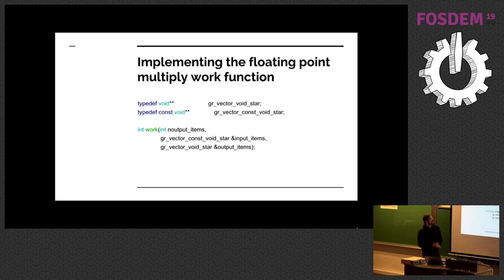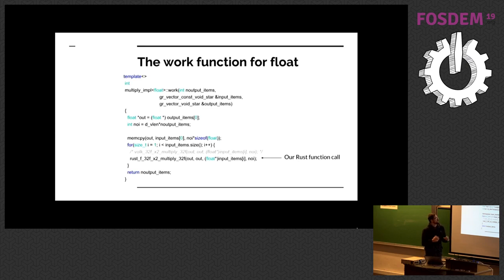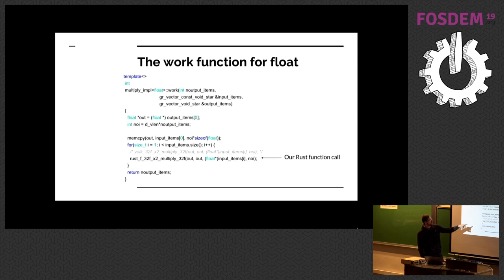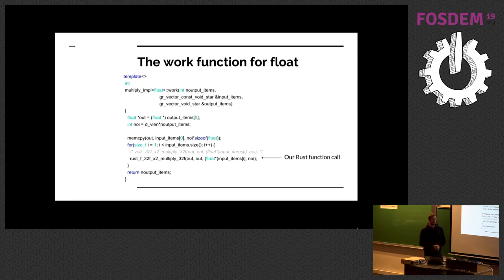Getting back to this function — we have some void pointers that we're playing with. We can just call into the Rust library. If we look more specifically at how we've implemented on the C++ side for the float type, it's not that weird — we're just saying that those void pointers, they were floats, it's fine. There happens to be a really nice place here where before we were calling into the Volk library, we can just now call into the Rust library instead. It's a very simple interface.